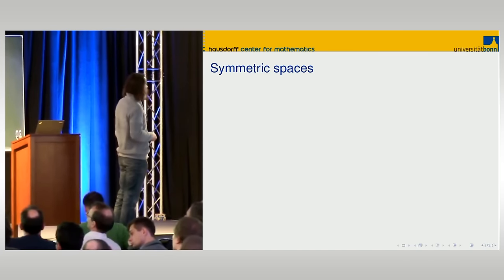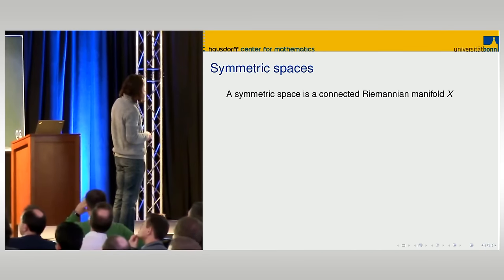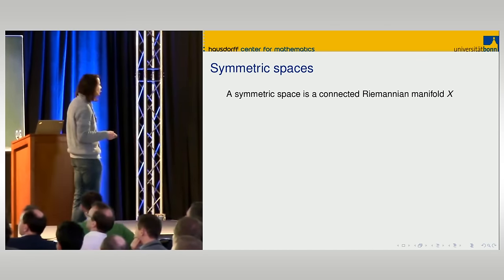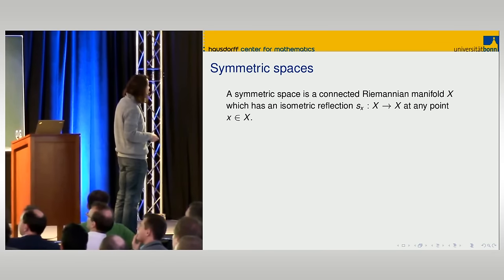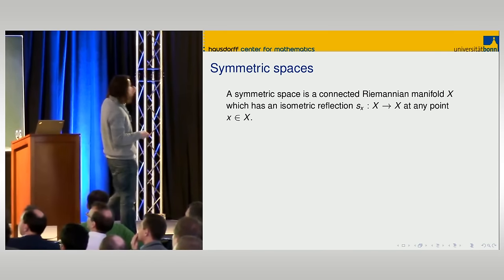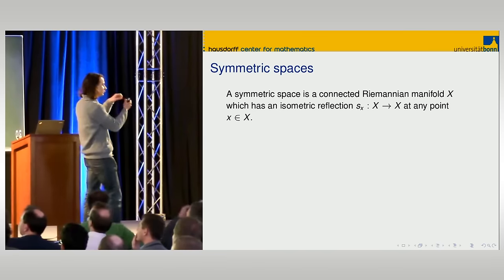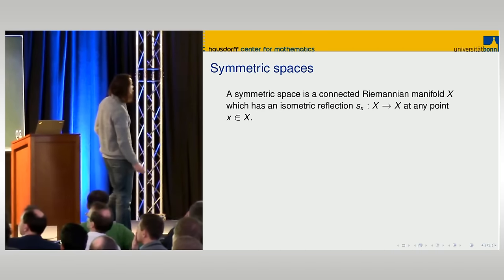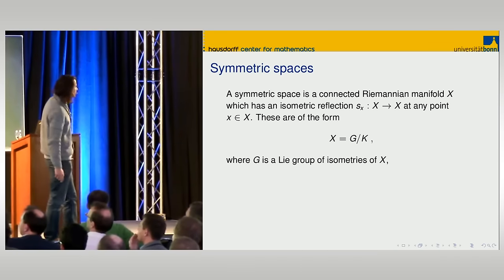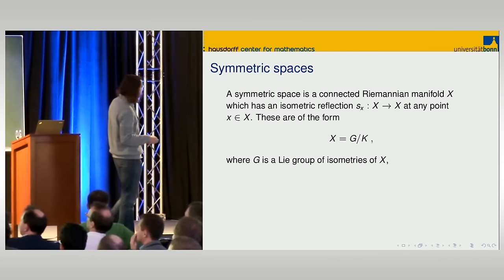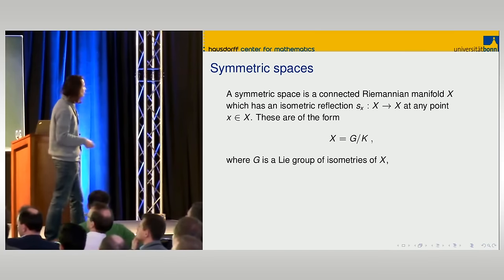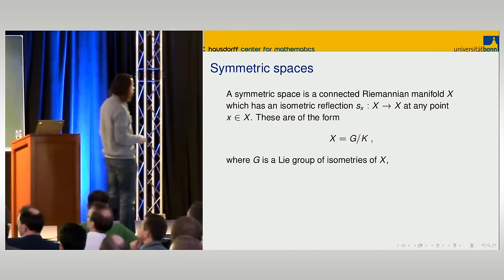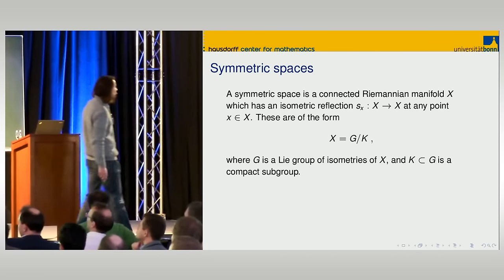I'm talking about locally symmetric spaces, so let's first recall what symmetric spaces are. Symmetric spaces are connected Riemannian manifolds with the condition that at any point there is an isometric reflection — on the tangent space it's minus the identity. These spaces are highly symmetric: there is a Lie group G of isometries of X which acts transitively, and the stabilizer of any point is a compact subgroup.